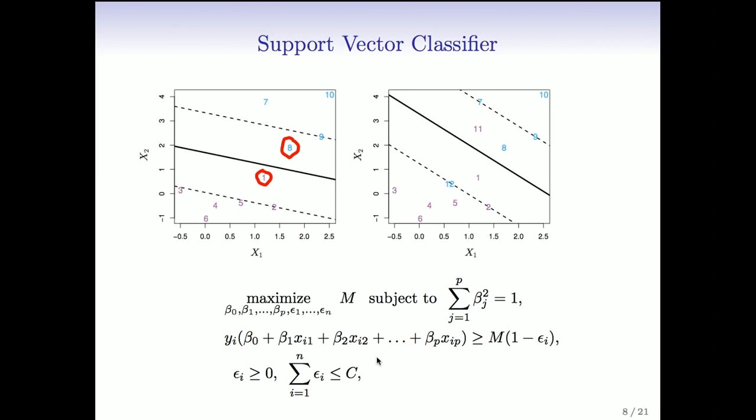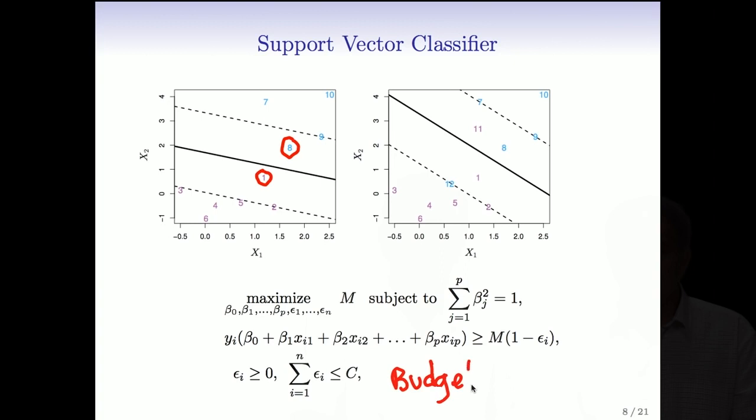We give ourselves a budget for the total amount of slack, which in this case is C. So the epsilons tell us how much each point is allowed to be on the wrong side of its margin. It's a relative amount relative to the margin. And we give ourselves a number C, a total amount of overlap, and then subject to that, we're going to make the margin as wide as possible to get on either side of the margin.